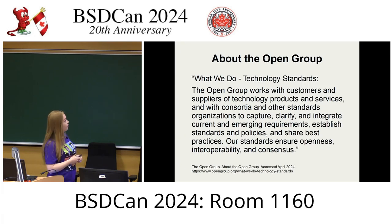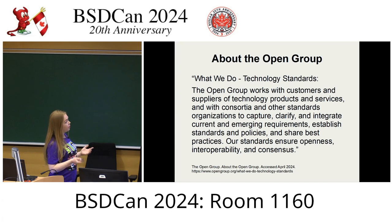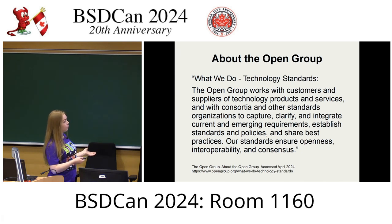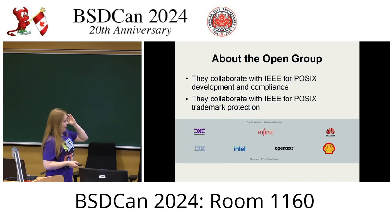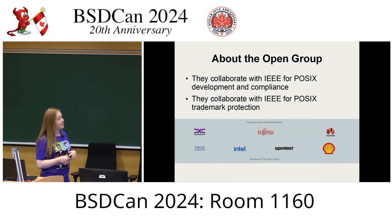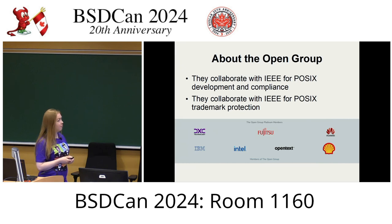More directly from their website — what they do: The Open Group works with customers and suppliers of technology products and services, and with consortia and other standards organizations to capture, clarify and integrate current and emerging requirements, establish standards and policies, and share best practices. Their standards ensure openness, interoperability and consensus. They collaborate with the IEEE for POSIX development and compliance, and for POSIX trademark protection, since POSIX is now protected under a trademark which the Open Group owns.